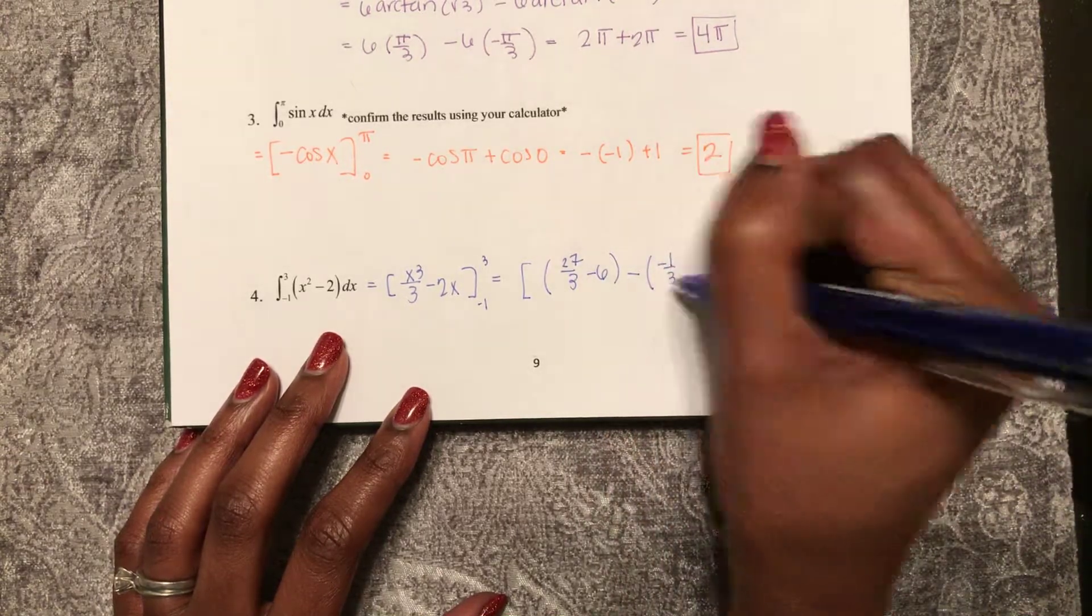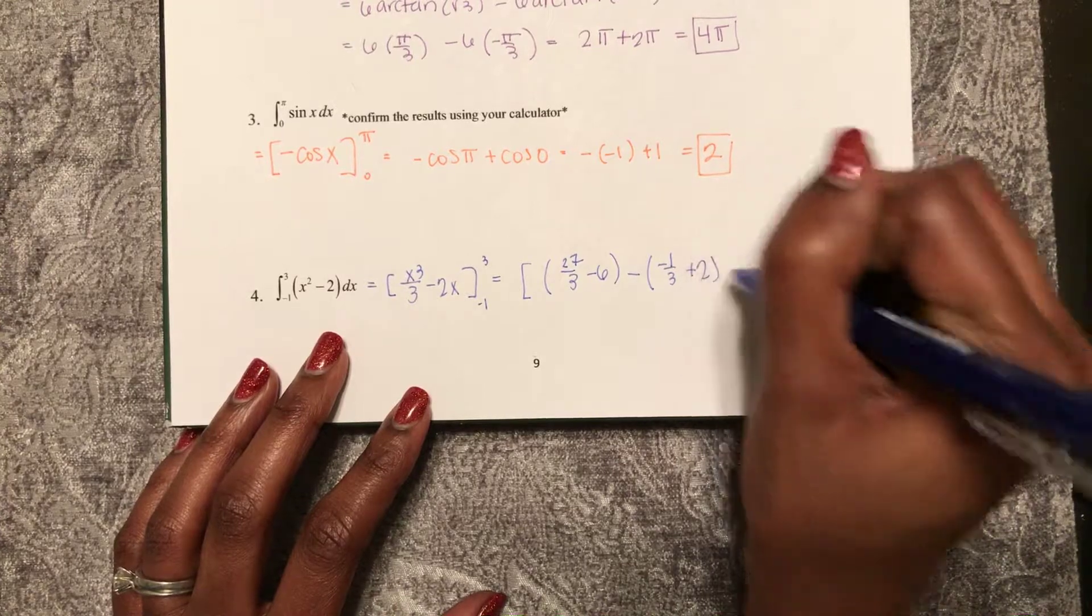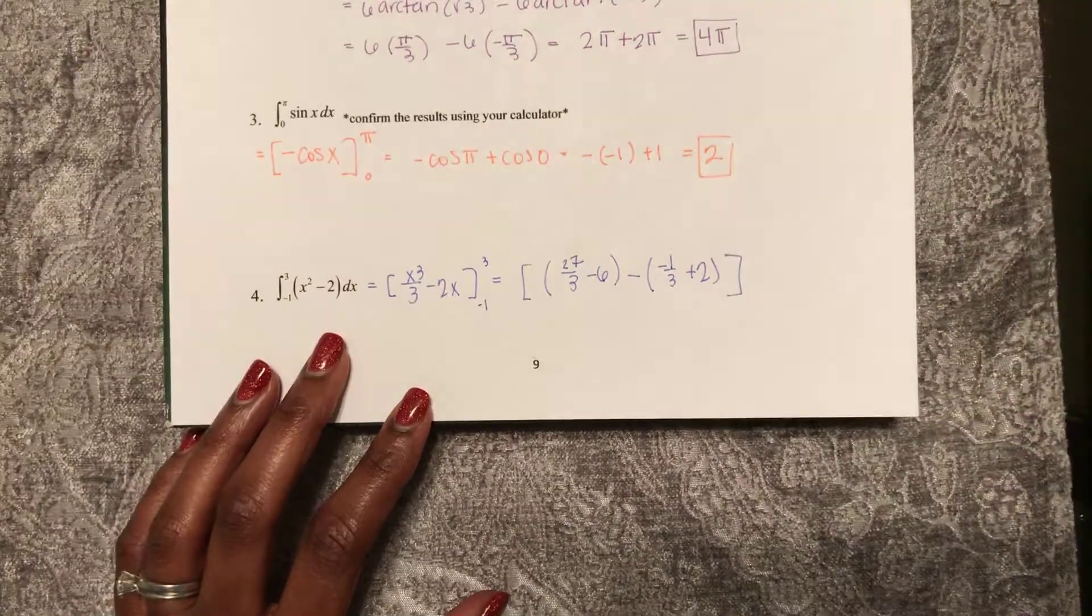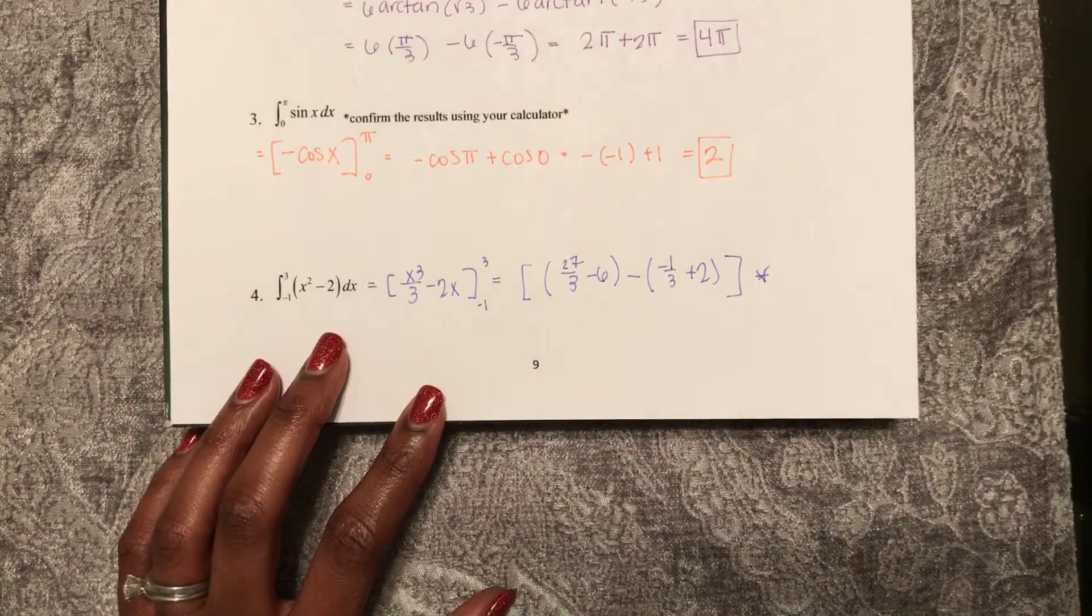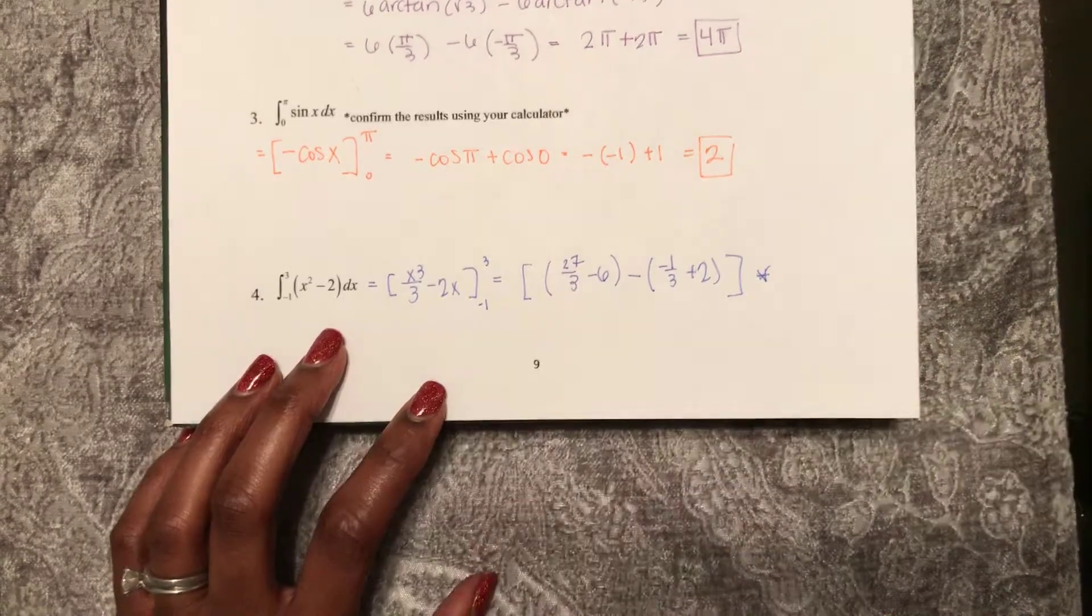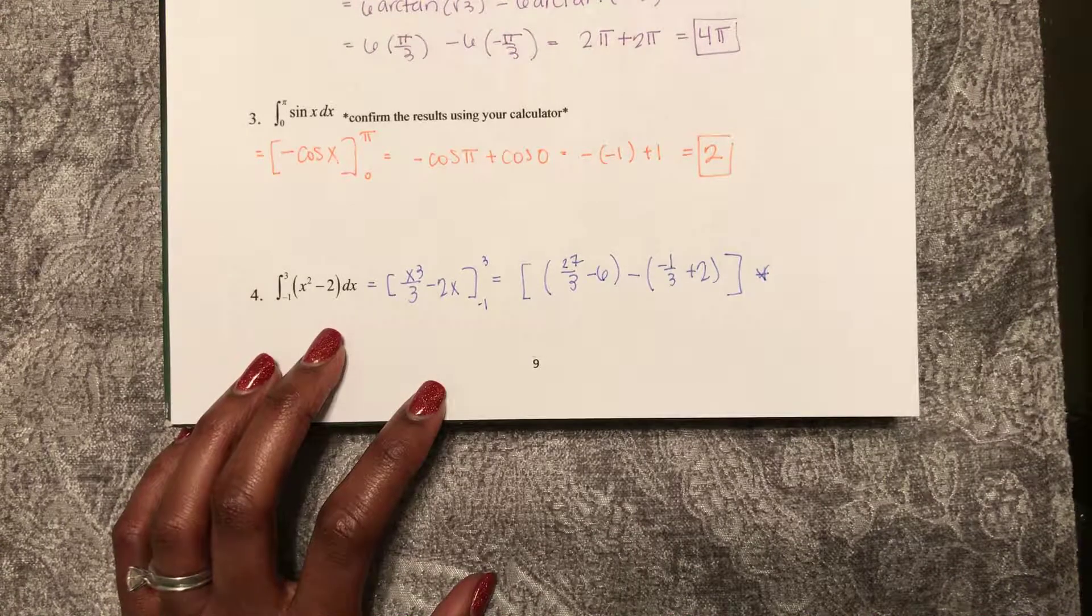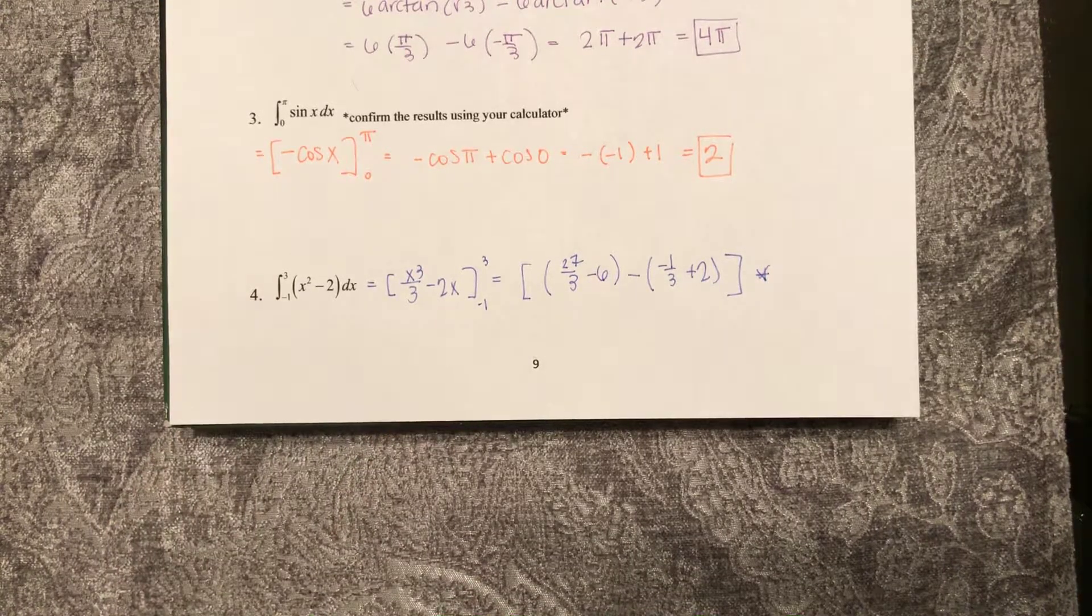negative 1 over 3 plus 2. I'm just going to leave my answer like this to save some time. Remember, if you were on a free response question, you could stop here for a definite integral.